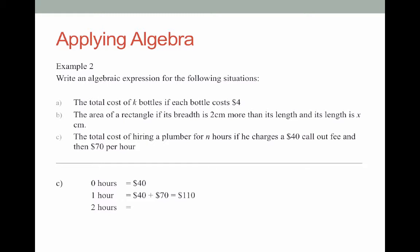If he worked for three hours he would get the call out fee and then he would get three lots of $70 which is $250. Finally I'm going to check four. What happens with four hours? What do you think? He'll get the call out fee and then he'll get four lots of $70 which is $320.